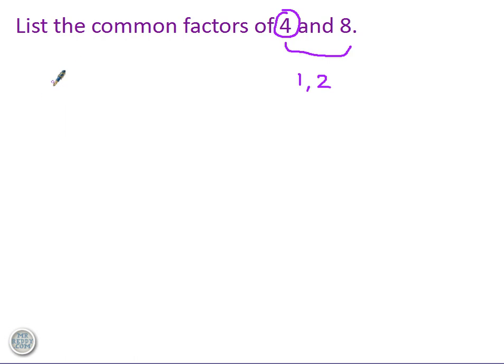And how could we avoid that mistake? We could avoid that mistake very simply by using the method that we used before. What are the factors of 4? 1, 2 and 4. What are the factors of 8? 1, 2, 4 and 8.